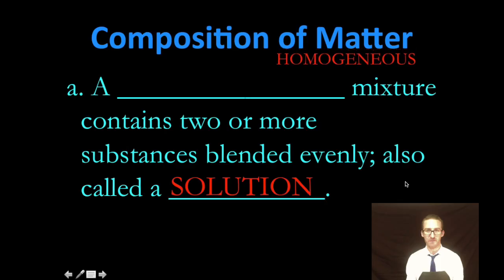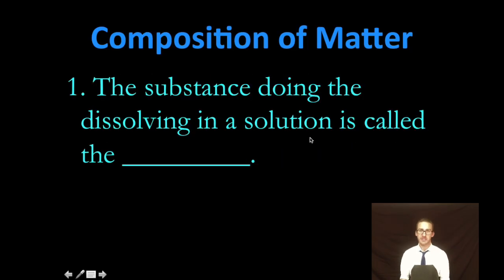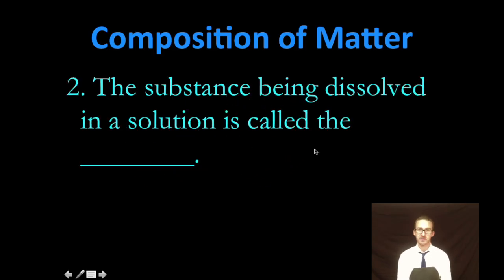Now we've got two types of mixtures. The first type, homogeneous mixture, contains two or more substances, but blended evenly, also known as a solution. The substance doing the dissolving in a solution is called the solvent. And typically, the most common solvent we use is water. And the substance being dissolved in a solution or homogeneous mixture is called the solute.